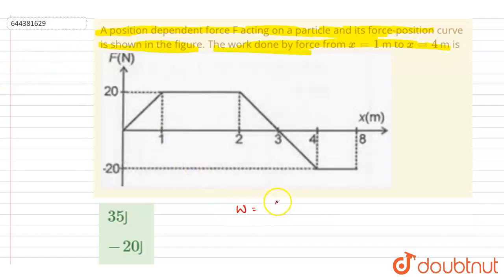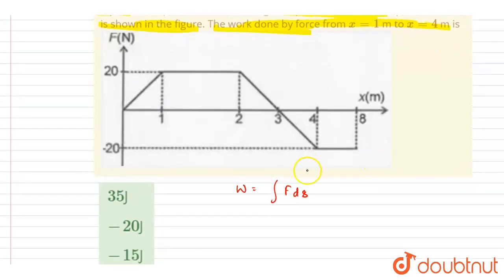If F is varying with the displacement, so this F dot ds is nothing but the area under F-s curve.